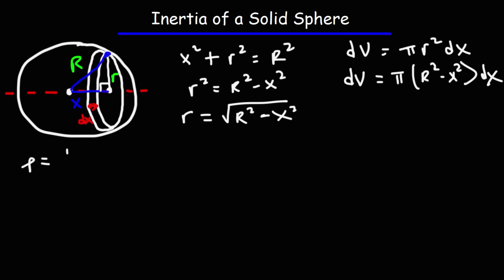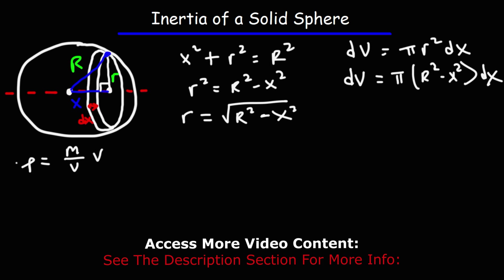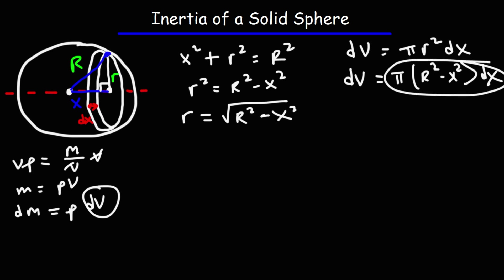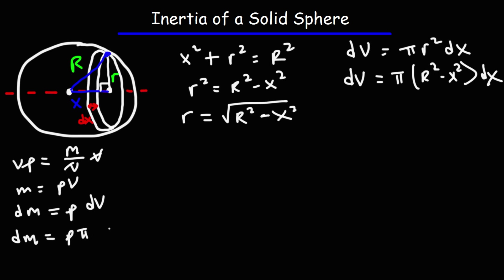Density is mass over volume. Multiplying both sides by V, we get that mass is rho times the volume — density times volume. The density of the sphere is assumed to be uniform throughout, so density is constant throughout the volume. Taking the derivative of both sides, we get dm = ρ dV. Replacing dV, we have dm = ρ · π · (R² − x²) dx.